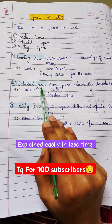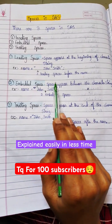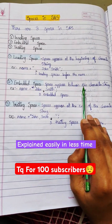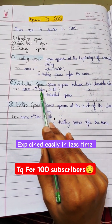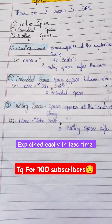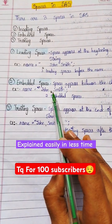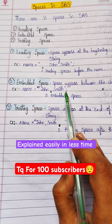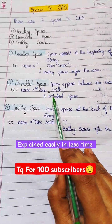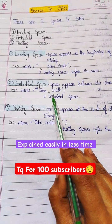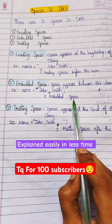Next is embedded spaces. Embedded spaces are nothing but the spaces that appear between the character string. You can see the example here. Name is assigned with double quotations: John, then two spaces, then Smith. Those two spaces between John and Smith are nothing but embedded spaces.